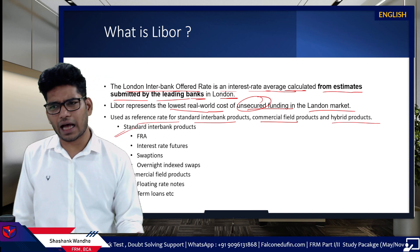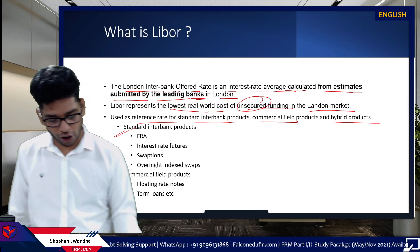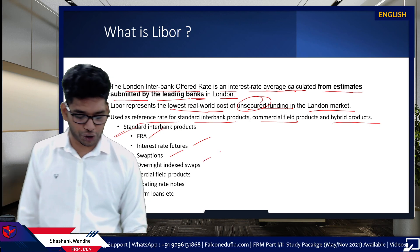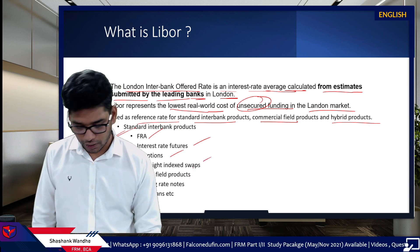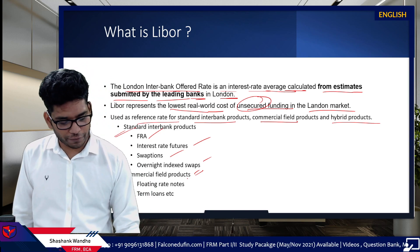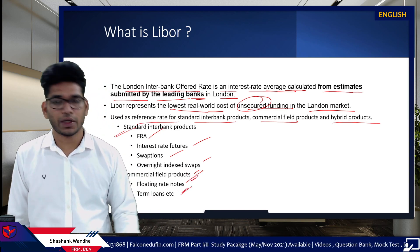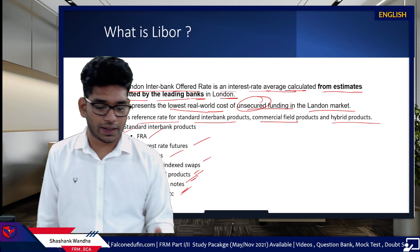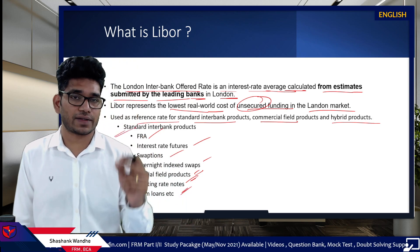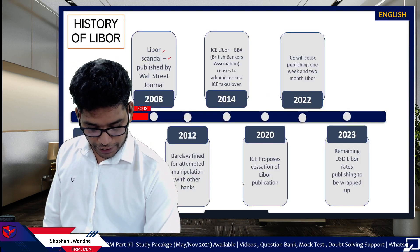Examples of standard products you are already aware of: FRAs, interest rate futures, swaptions, and overnight index swaps — everything is in your syllabus. Commercial field products include floating rate notes, term loans, and CDSs. These are just a few of the products which use LIBOR as a reference rate, as a risk-free rate consideration.